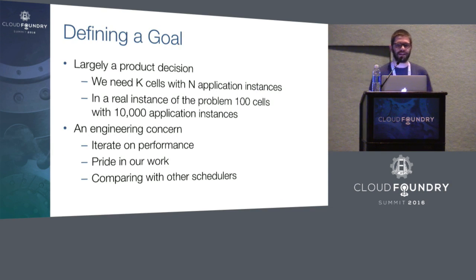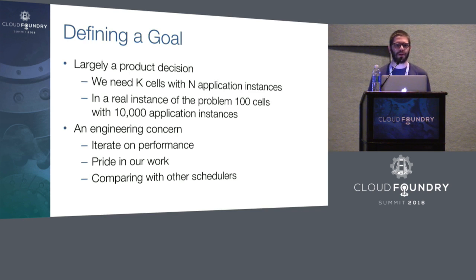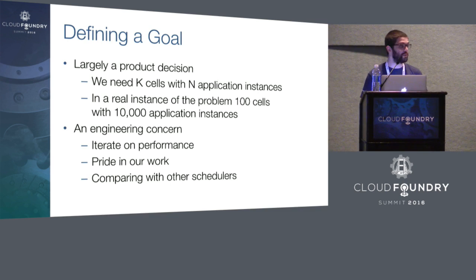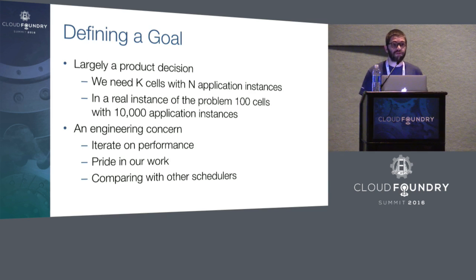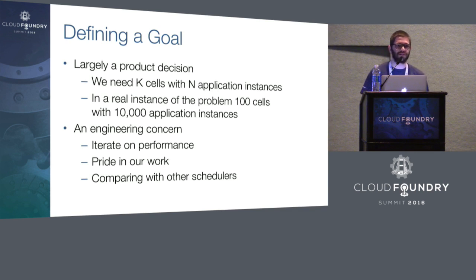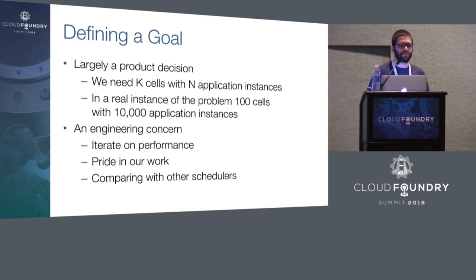So how do we define a scaling goal for Diego? It's largely a product decision — we need to know how many cells we want to support and how many application instances we want to run in those cells. The first part of the work is defining where we stand currently and then deciding where we want to be short-term and long-term. For Diego, we initially targeted a larger-than-average deployment size, which meant 100 cells running around 10,000 application instances. That is a modest goal, but it's a stepping stone to more aggressive numbers and it allowed us to flush out a few bottlenecks early on.